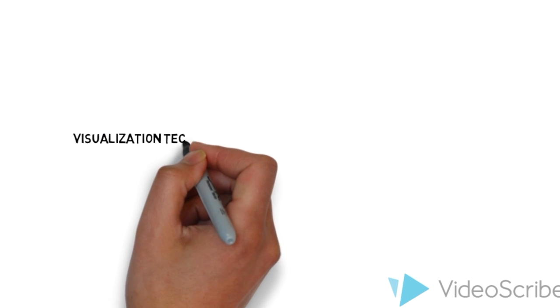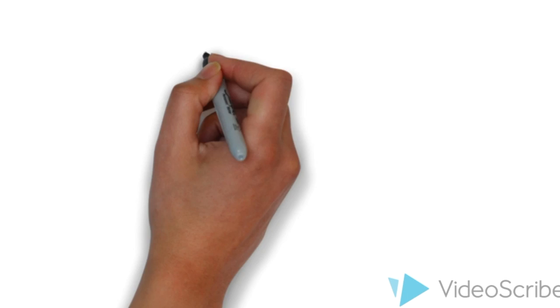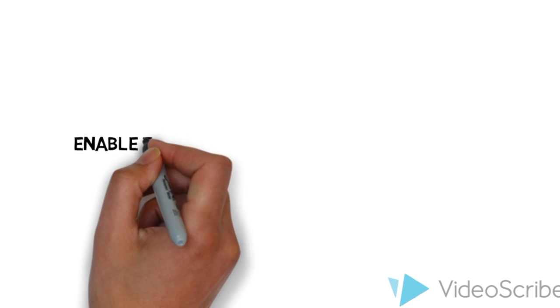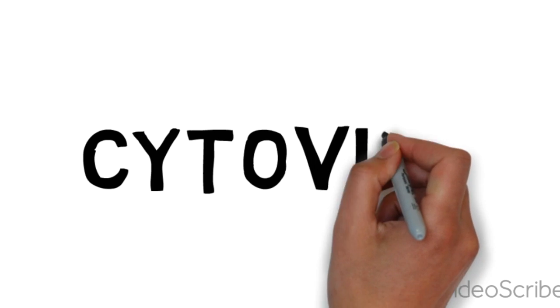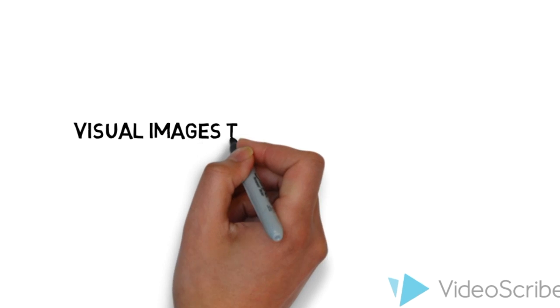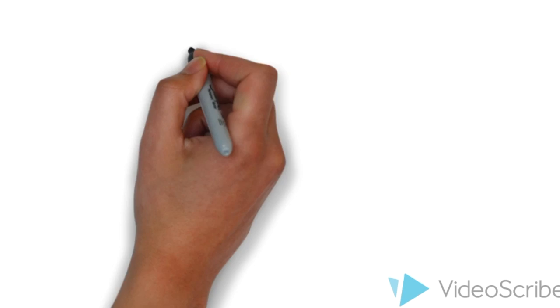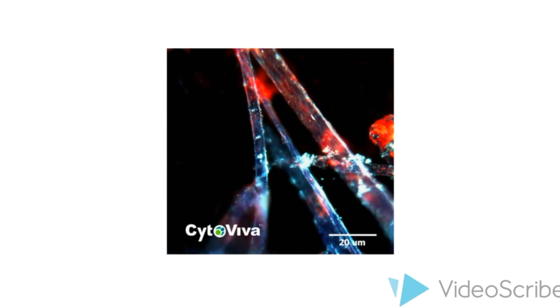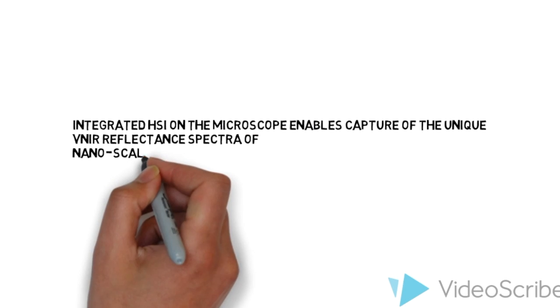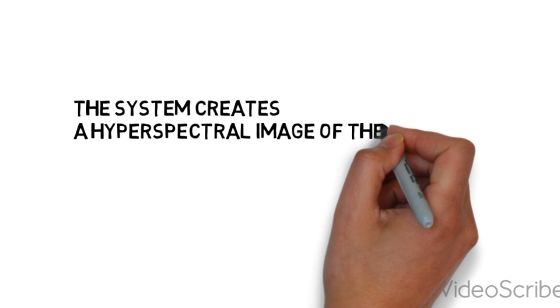Hyperspectral microscopy is an advanced visualization technique that combines hyperspectral imaging with state-of-the-art optics and computer software to enable the rapid identification of materials at the micro and nano scales. A technology called Cytoviva is based on this principle and allows us to produce visual images that have 7 times the intensity of standard dark field microscope optics. Integrated hyperspectral imaging on the microscope enables capture of the unique VNIR reflectance spectra of nanoscale materials within a wide range of biological and composite environments, creating a hyperspectral image that enables nanomaterials to be spectrally characterized and mapped throughout the entire sample.